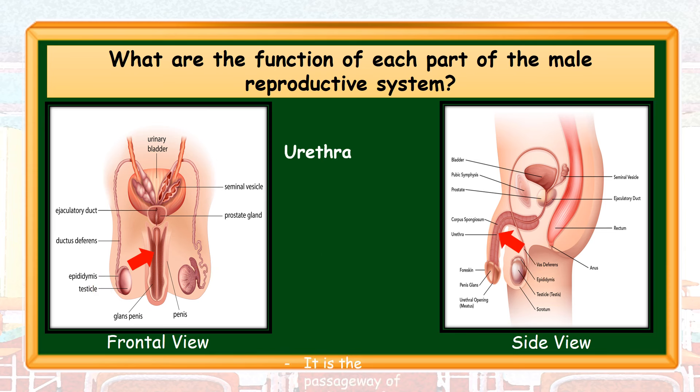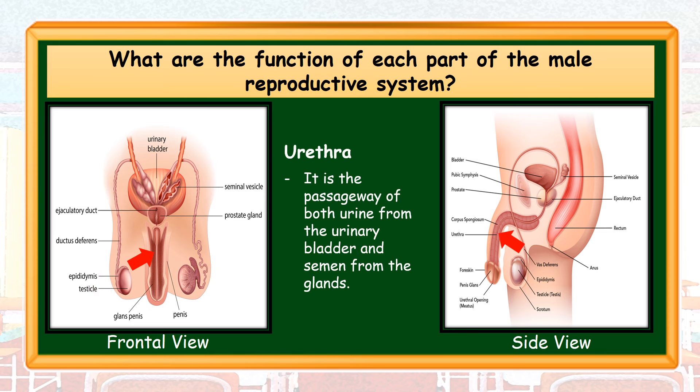Urethra — it is the passageway of both urine from the urinary bladder and semen from the glands. Urine is the waste material collected by the urinary system, while semen is the whitish fluid that carries the sperm cell.